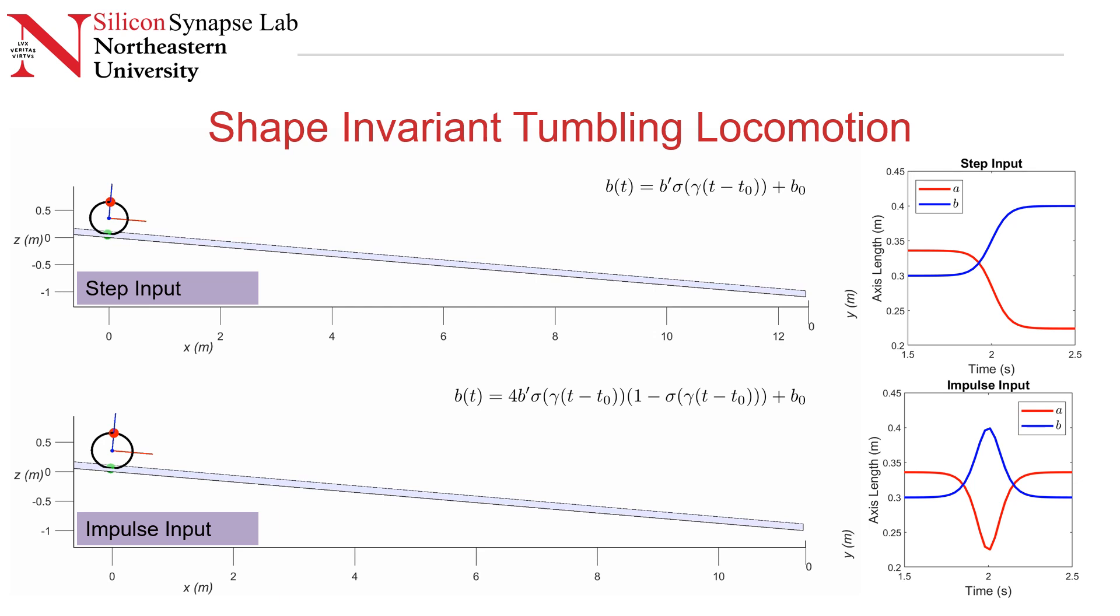The inputs that we are considering for the study—we consider symmetric inputs about the center of mass such that the center of mass is always located at the center of the ellipse. We consider a step input and an impulse input, where the vertical axis of the ellipse goes up from length of 0.3 to 0.4. In the case of step input, it stays there. In the case of impulse input, it returns back to 0.3 within a certain amount of time. We use a sigmoid function and a derivative of the sigmoid function that lets us control the time and rate at which these inputs change.